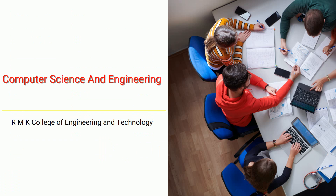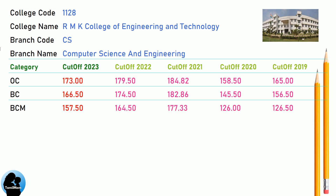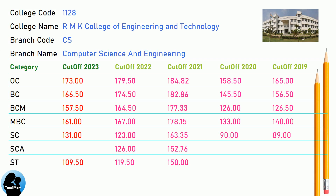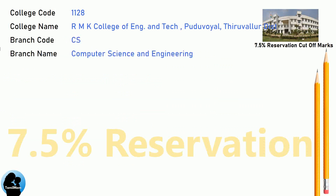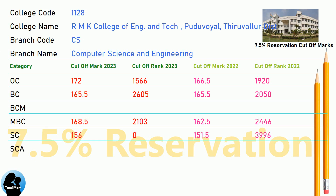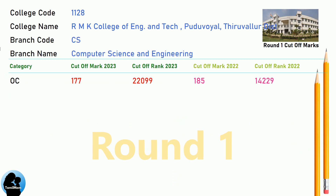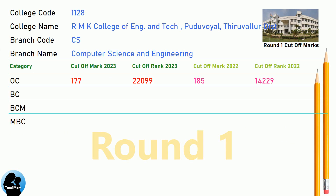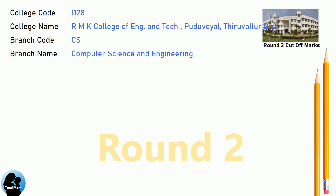DNA cutoff for MK College of Engineering and Technology in Computer Science and Engineering. DNA 7.5 reservation cutoff for MK College of Engineering and Technology in Computer Science. DNA Round One cutoff for MK College of Engineering and Technology in Computer Science Engineering. DNA Round Two cutoff for MK College of Engineering and Technology in Computer Science and Engineering.